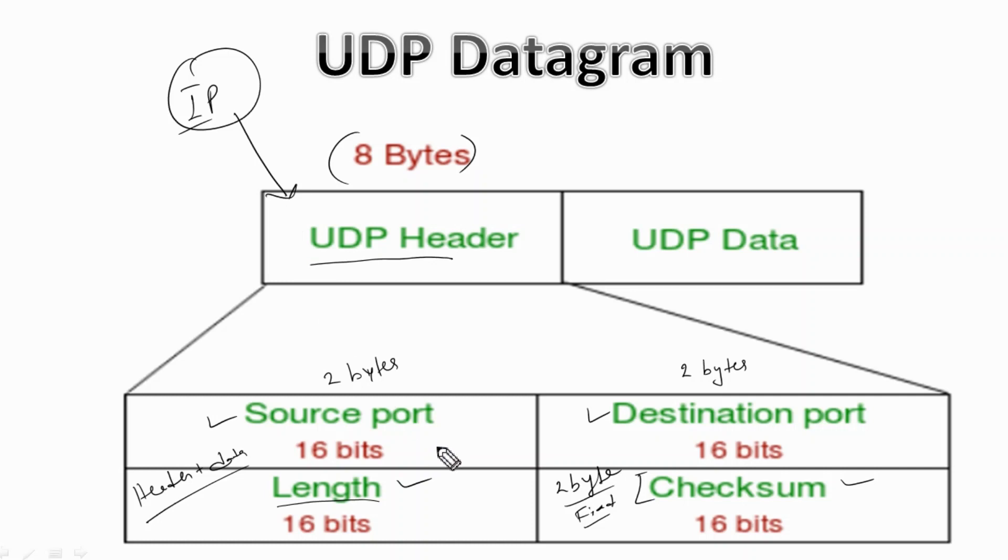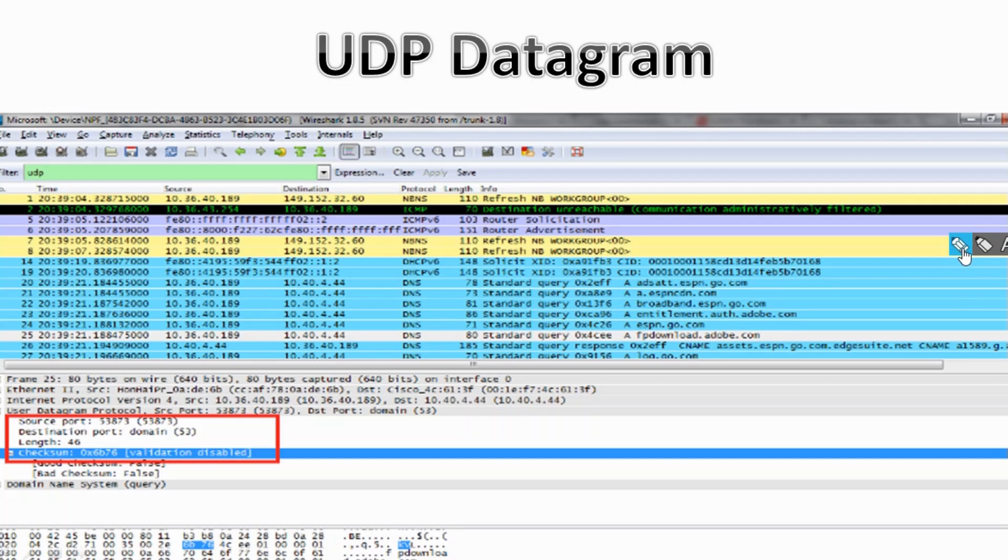Here we have a Wireshark packet capture, and you can see the same thing - under the UDP field, we have the source port, destination port, length, and checksum. If you have a Wireshark packet capture, you can find...